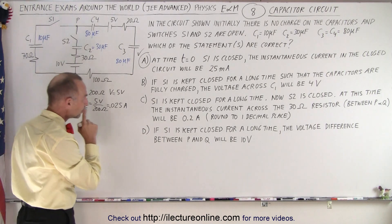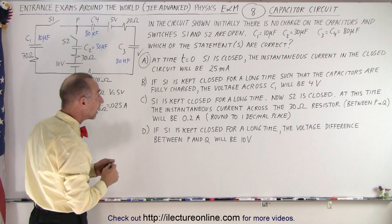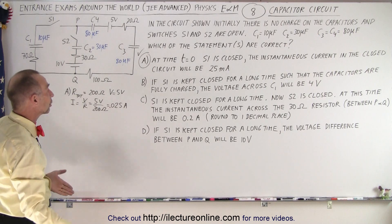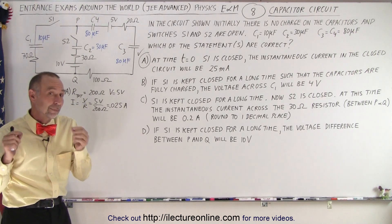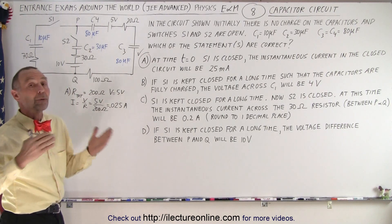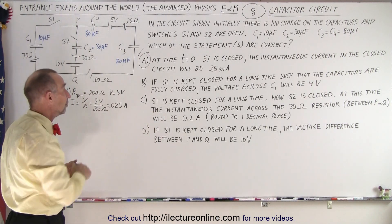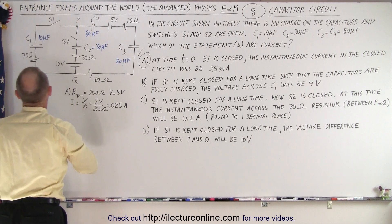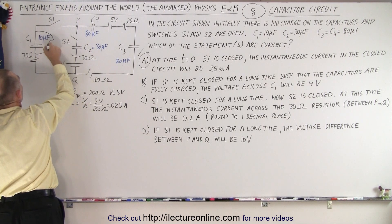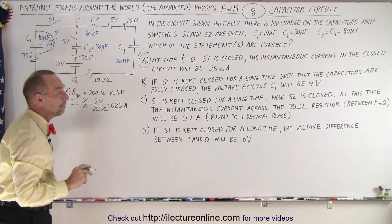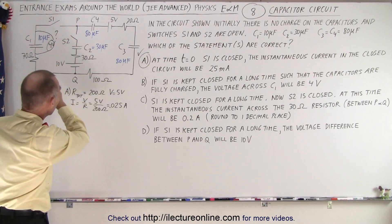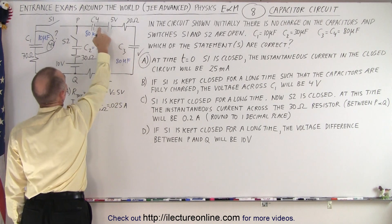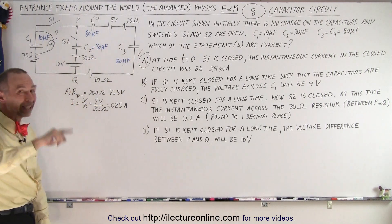How about B? Now S1 is kept closed for a long time such that the capacitors are fully charged. Once the capacitors are fully charged, they don't allow any current to flow. Now they want us to know the voltage across C1, is that equal to 4 volts? So here the question is, is the voltage across this circuit 4 volts for part B? For that what we need to do is first figure out the total capacitance. We have C1, C3, and C4, a total of 3 capacitors, and they're all connected in series.